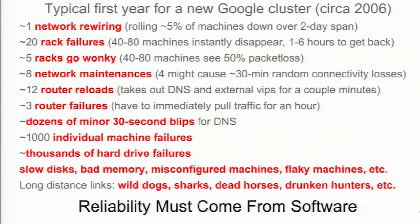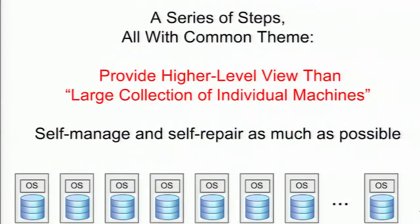You could buy slightly more reliable machines with redundant power supplies, which would fail a bit less frequently. But ultimately, when you're operating at a certain scale, you really have to have reliability come from the software, because you're going to have failures of a wide and disparate flavor. These systems need to self-manage and self-repair as much as possible.